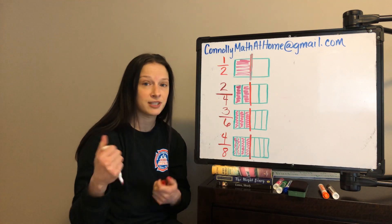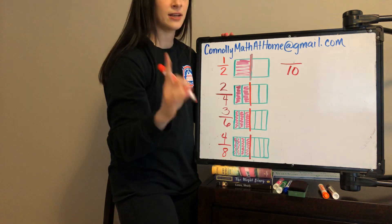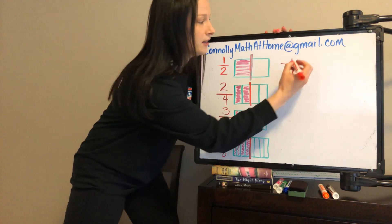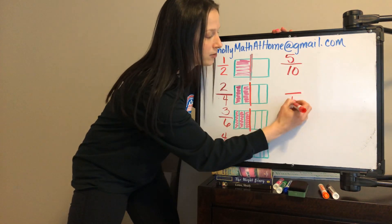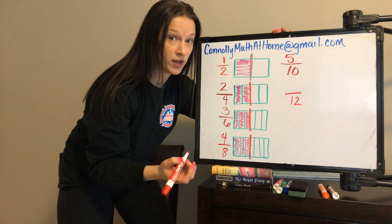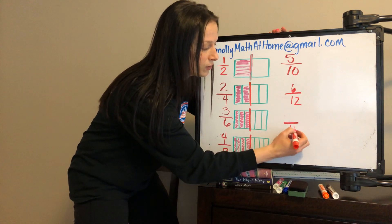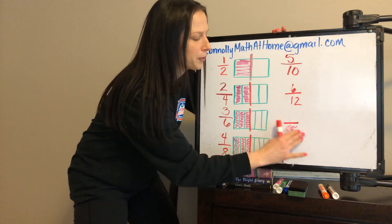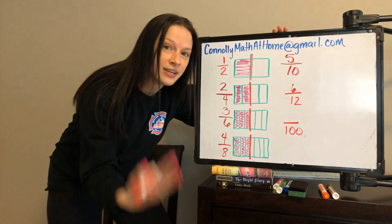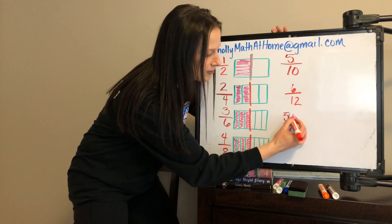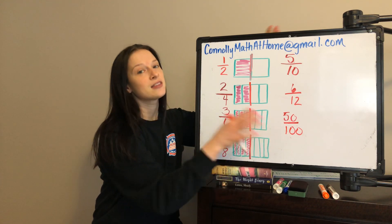Let's come up with some other equivalencies before we move into comparisons. When I think about denominator 10, I ask: what is half of 10? That gives me 5 tenths, a fraction equivalent to a half. When I think about 12, half of 12 is 6, so 6 twelfths is equivalent to 1 half. And when we think about hundredths — what is half of 100? 50. So 50 hundredths is equivalent to 1 half.